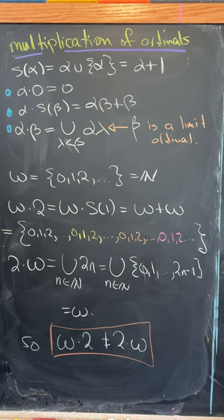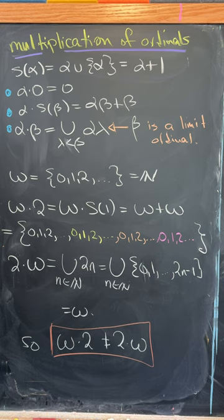But if you do 2 times omega via the definition again, you'll see that you get omega, meaning that we do not have commutativity of multiplication.